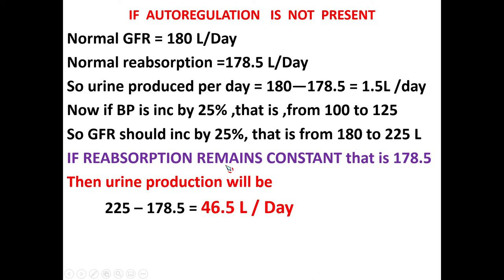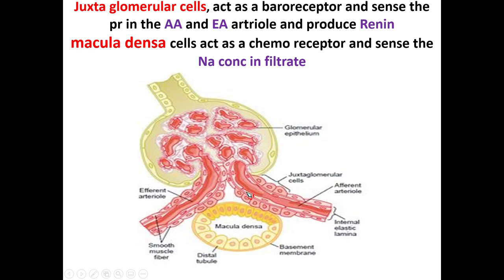The juxtaglomerular apparatus plays a very important — key — role in the auto-regulation of GFR. It is a machine or apparatus provided with each nephron and is very important for the auto-regulation of GFR.